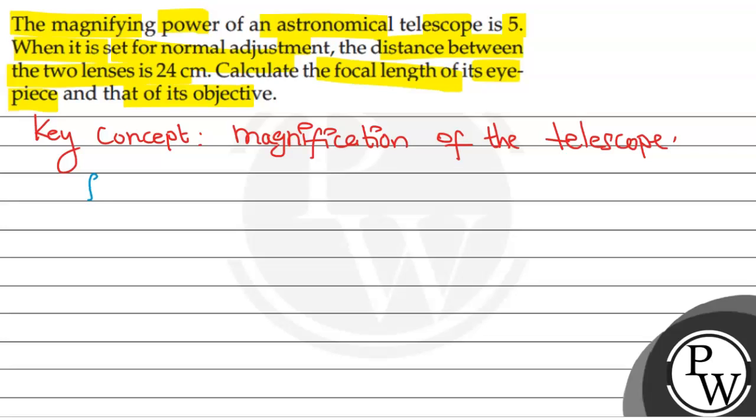The question gives us that magnification is equal to 5, and f_o plus f_e is equal to 24 cm.